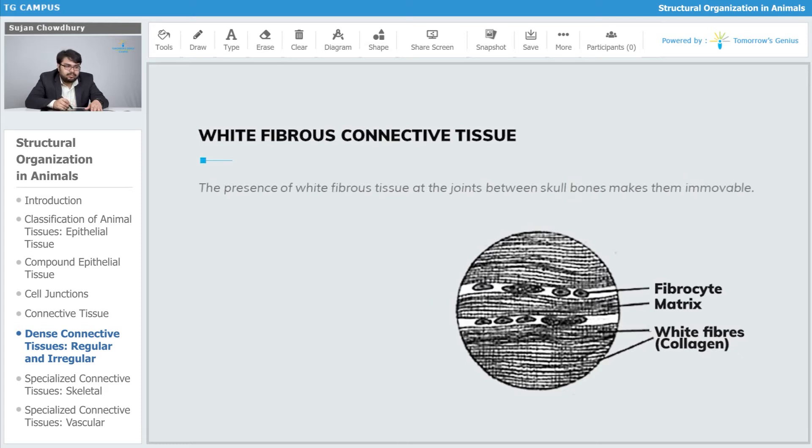The presence of white fibrous tissue at the joint between skull bones makes them immovable. The skull bones are joined by sutures, and at that area we have white fibrous connective tissue. It provides very limited flexibility, so the skull bones are immovable, including the eight bones which make up the brain box.